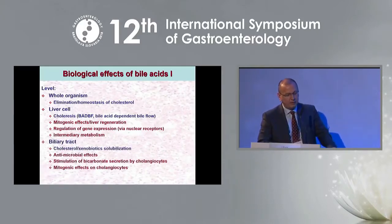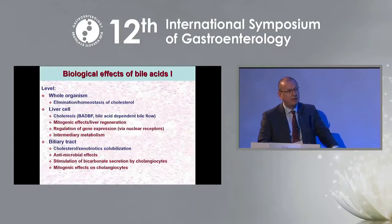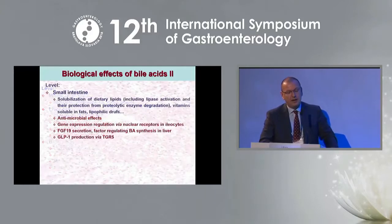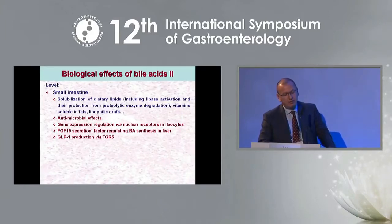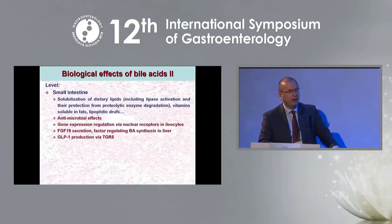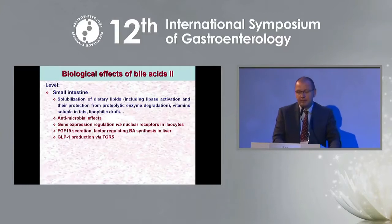Bile acids have effects on the intermediary metabolism of macronutrients, mostly lipids and saccharides. On the level of the biliary tract, they have effects on cholesterol and xenobiotic solubilization, antimicrobial effects, and they can stimulate bicarbonate secretion by cholangiocytes — as seen in studies with nor-UDCA and bis-nor-UDCA for primary sclerosing cholangitis. There are also mitogenic effects on cholangiocytes. On the level of the small intestine, they are responsible for solubilization of dietary lipids, again have antimicrobial effects, and regulate gene expression via nuclear receptors in illeocytes. They are responsible for FGF-19 secretion, which regulates bile acid synthesis in the liver.